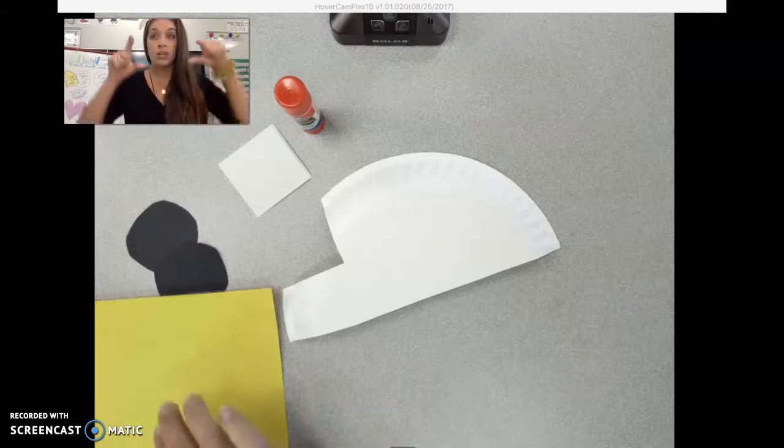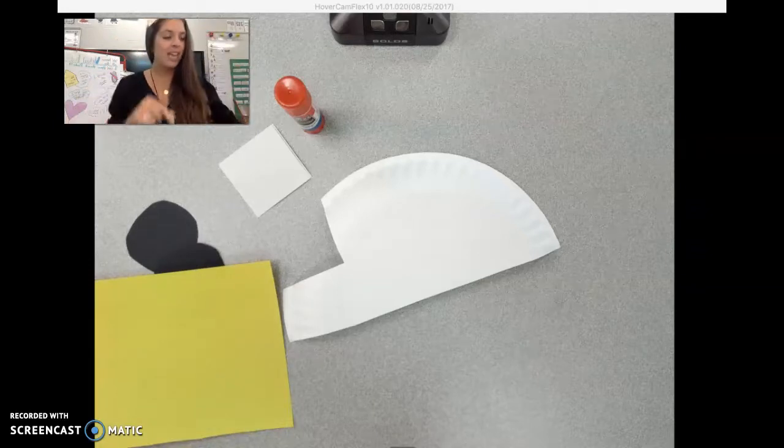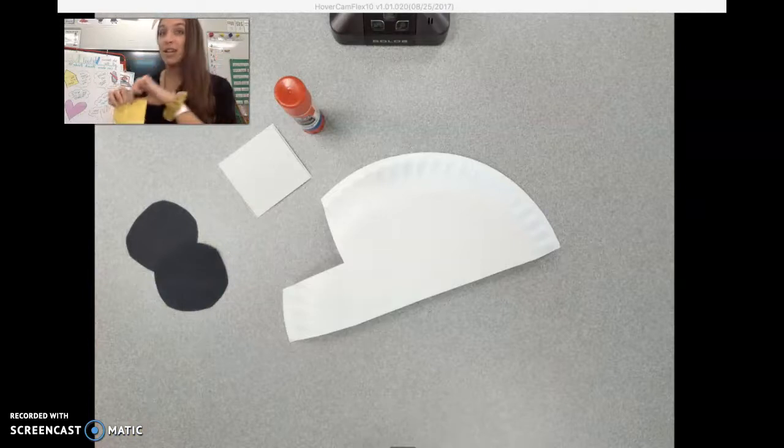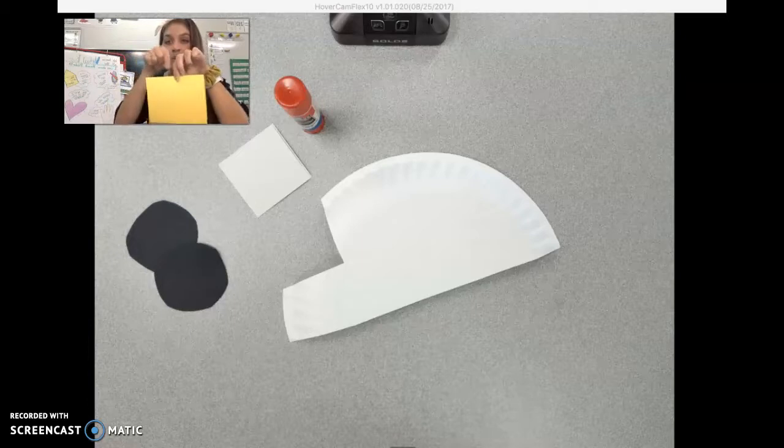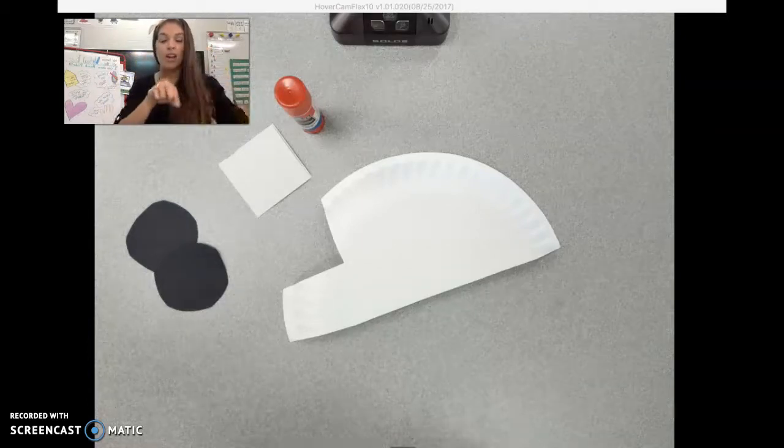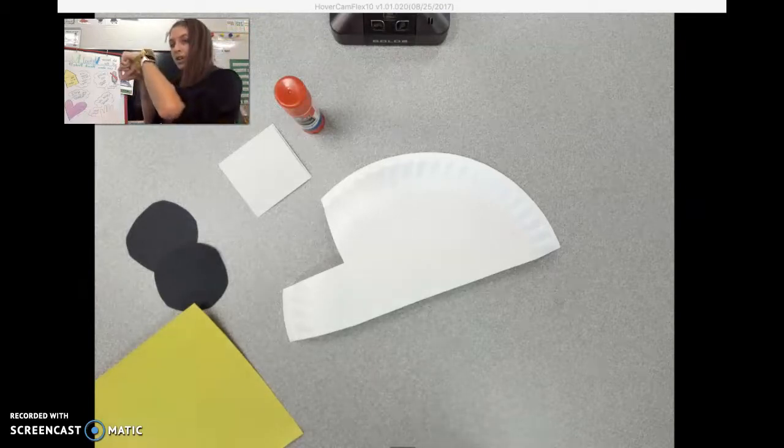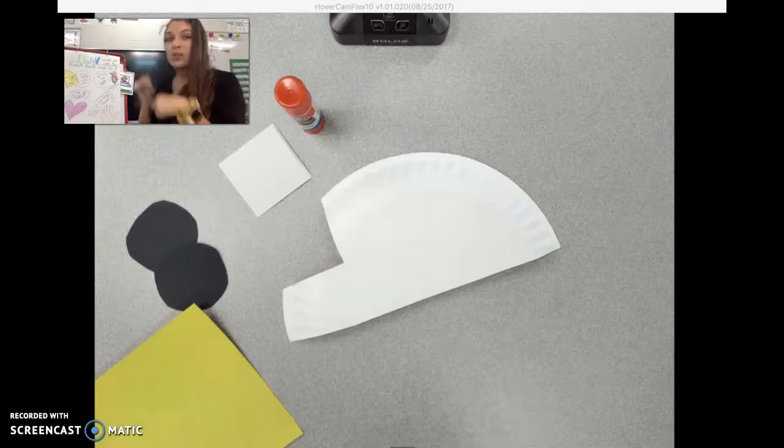But for right now, we're only using our pincher fingers. So you're going to get them ready and take your yellow piece of paper. This is a great activity to work on those fine motor muscles. One hand is going to come towards you, and one hand is going to go away from you.